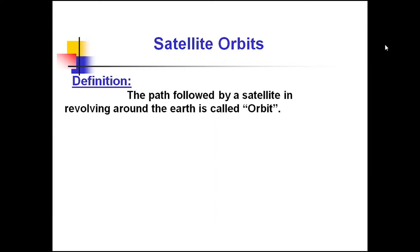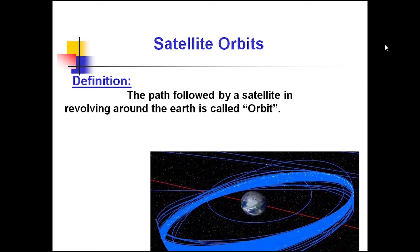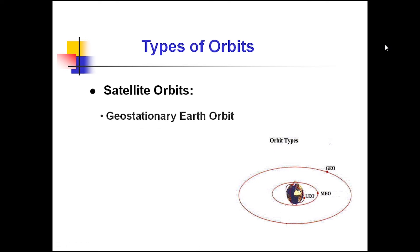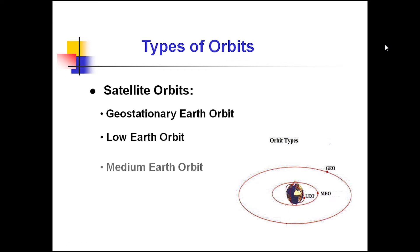The path followed by a satellite when it is revolving around Earth is called an orbit. There are different types of orbits: geostationary Earth orbit, lower Earth orbit, medium Earth orbit, and other orbits.